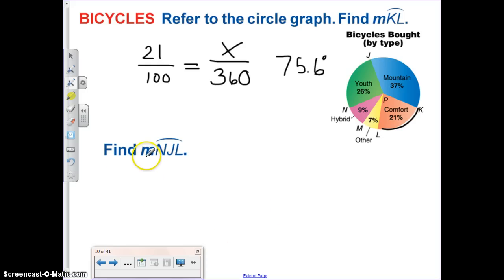Let's do the same thing for the measure of arc NJL. So, here's NJL. In this case, I'm going to add up 26 plus 37 plus 21.